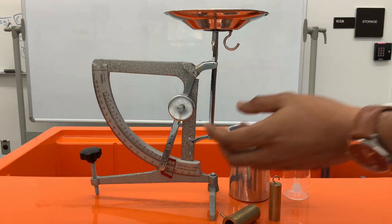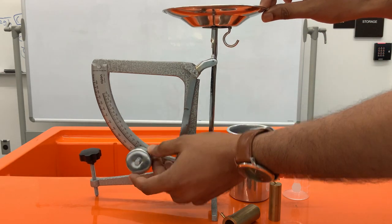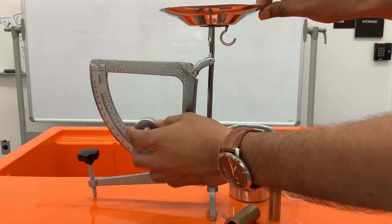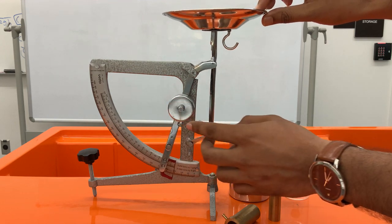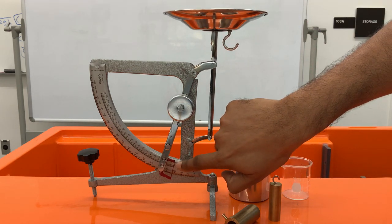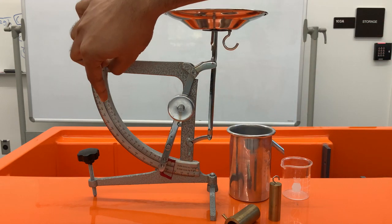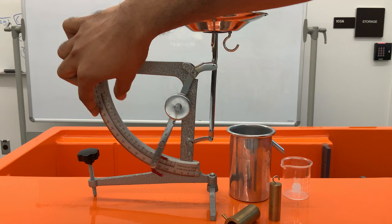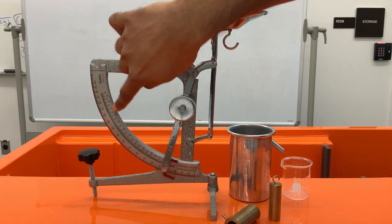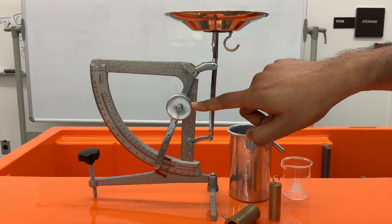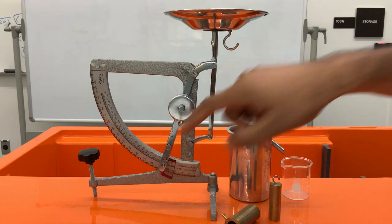This counterweight can be removed this way. So if I put it on the top, the scale on the top is the reading we should be using because there are two scales on this gauge. When the counterweight is at the top we'll be using the top one.